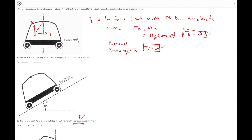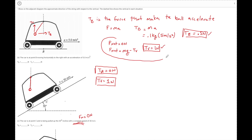Now the cart is being pulled up at constant speed, which means F_net everywhere equals zero newtons. The ball just hangs straight down — nothing makes it accelerate horizontally or vertically. Since there's no net horizontal force, TB equals zero newtons. And once again the vertical tension equals 1 newton, equal and opposite to gravity, just like in Part A.